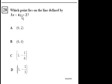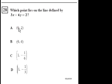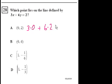Next problem. Which point lies on the line defined by 3x plus 6y equals 2? The best thing to do is just substitute these numbers in for x and y and see which one works. Here x is 0, y is 2. So 3 times 0 plus 6 times 2 equals 0 plus 12. It doesn't equal 2, it equals 12. So this one doesn't work.